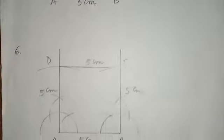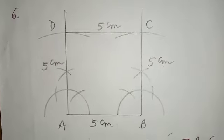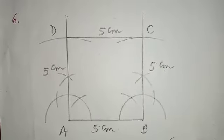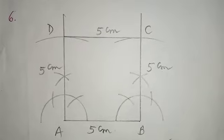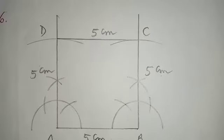Now, we will come to question number 6: draw a square each of whose sides is 5 cm. Use a pair of compasses and a ruler in your construction.